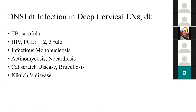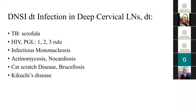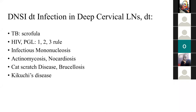HIV often causes cervical lymphadenopathy as part of early-stage HIV disease — persistent generalized lymphadenopathy following the 1-2-3 rule: lymph nodes one centimeter or more in size, at two or more extra-inguinal sites, lasting more than three months. If this is the underlying cause of the deep neck space infection, the treatment may ultimately just be antiretrovirals.